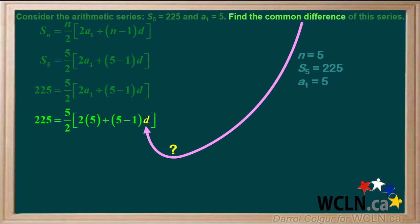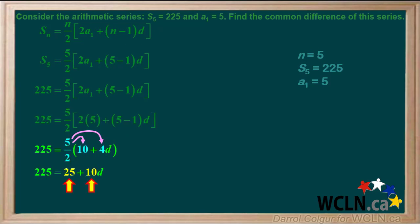We're asked to find the common difference D, so we need to solve this equation for D. 2 times 5 equals 10, and 5 minus 1 equals 4. Using the distributive property, 5 over 2 times 10 equals 25, and 5 over 2 times 4 equals 10. Subtracting 25 from both sides gives us 200 equals 10D. And dividing both sides by 10 gives us D equals 20.